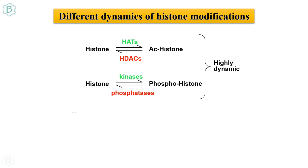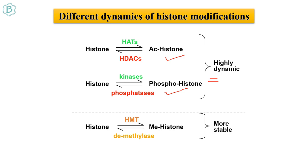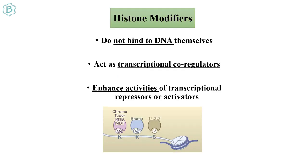Different dynamics exist for histone modifications. Acetylation/deacetylation and phosphorylation/dephosphorylation are highly dynamic because they are involved in active transcription regulation. Histone methylation is more stable because it usually leads to the formation of heterochromatin-like structures and represses transcription. Histone modifiers are proteins that read the modifications; they do not bind DNA themselves but can act as transcriptional co-regulators, enhancing the activities of transcriptional repressors or activators when present in a multi-subunit complex.